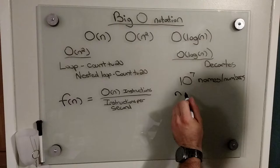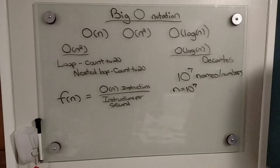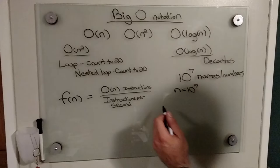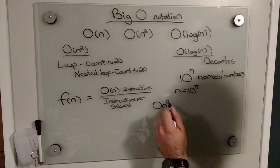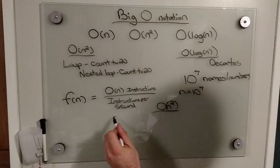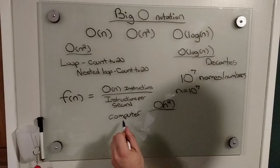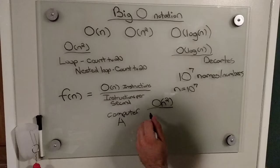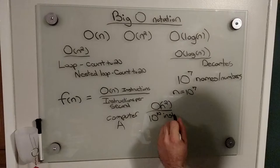And so we're going to run basically a little scenario here where if we had, we're going to deal with this same number of instructions that we have here. We're going to deal with 10 million, a 10 million data set. And so with our, we're going to have O(n²), and this will be, we'll call this computer A.